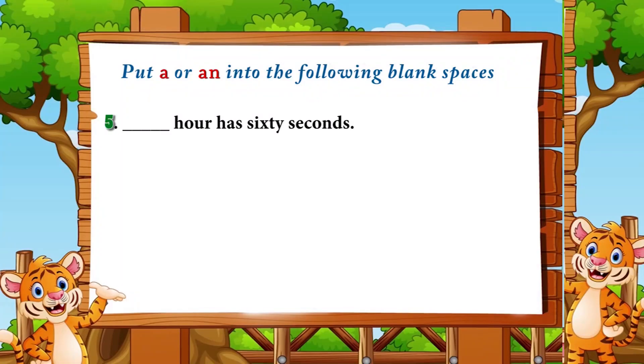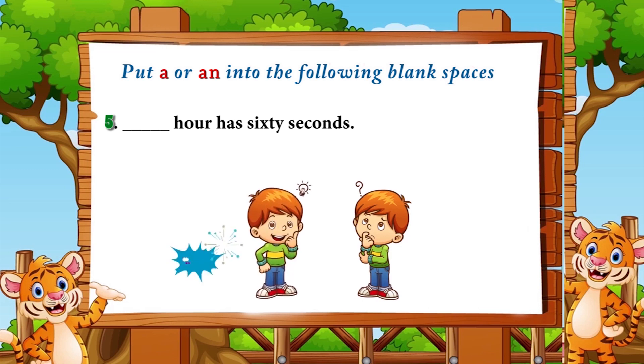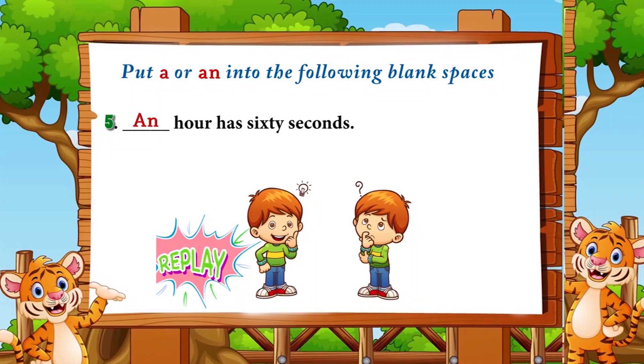Number five: '___ hour has sixty seconds.' The answer is 'an' — 'an hour has sixty seconds' — because 'h' in 'hour' is silent and it begins with the vowel sound 'a.'